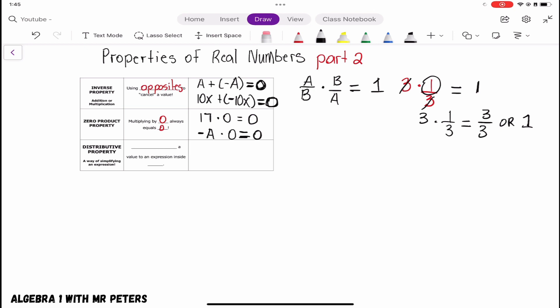So the very last property, and this is the one that you guys are going to see the most in algebra, so please try your best to learn it and understand it. When we're talking about the distributive property, we should know that we're going to be multiplying. That's the very first thing: multiplying. And what exactly are we multiplying? We're going to be multiplying a value to an expression inside of parentheses.